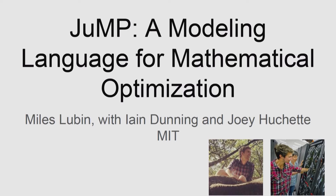Thanks for waking up early and coming to see this talk. I'm going to be talking about a software package called JuMP. It is a modeling language for mathematical optimization, and I'll explain what that means. This was a project that I worked on with fellow students Ian Dunning and Joey Hutchett, all at MIT. This will not be part of my thesis, although I will be using it for my thesis.